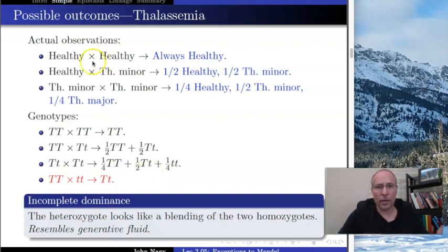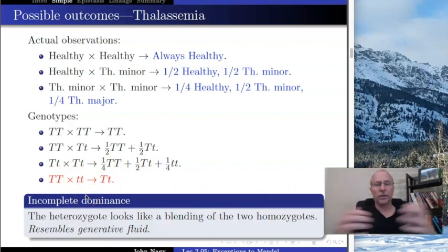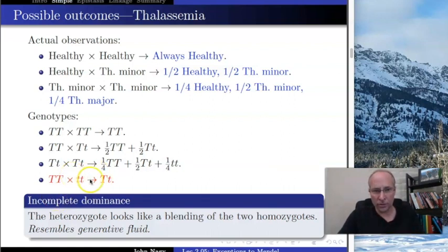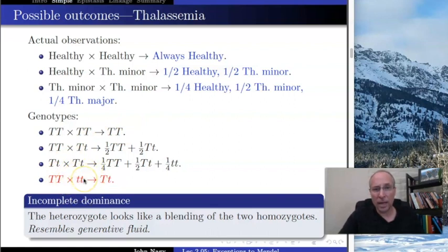If a healthy individual were to have a child with someone who had thalassemia major — which we haven't seen enough of to confirm — we would predict: the healthy individual always gives big T, the major individual always gives little t, and all offspring would be Tt — thalassemia minor. It wouldn't matter whether we coded the healthy allele as little t and the thalassemia allele as big T; you could code either way and it wouldn't change anything. This is further evidence there is no dominance here.